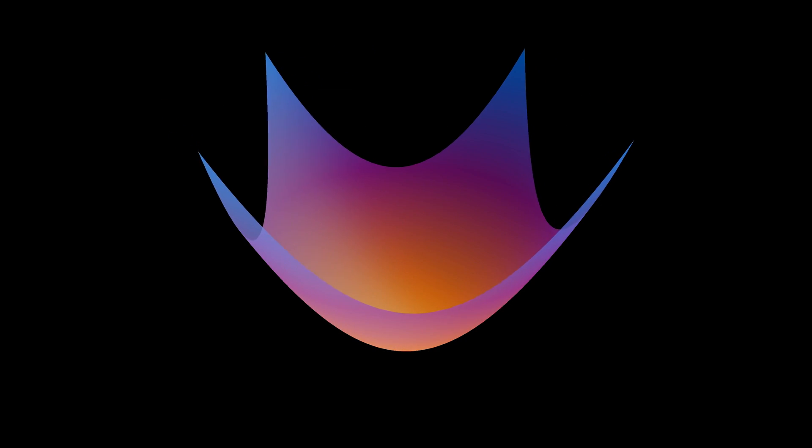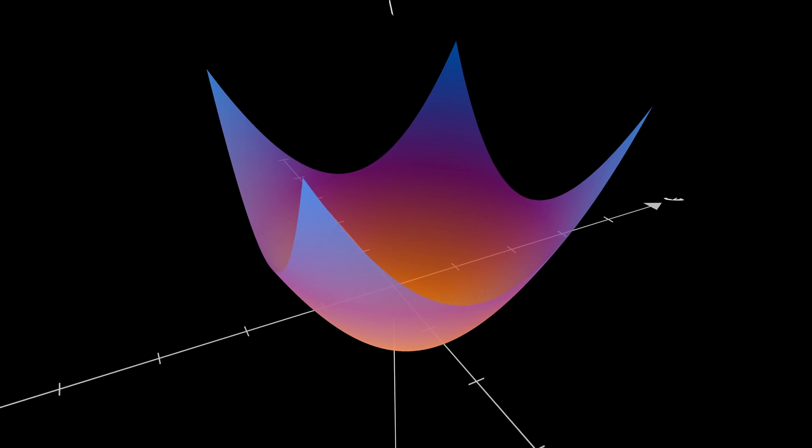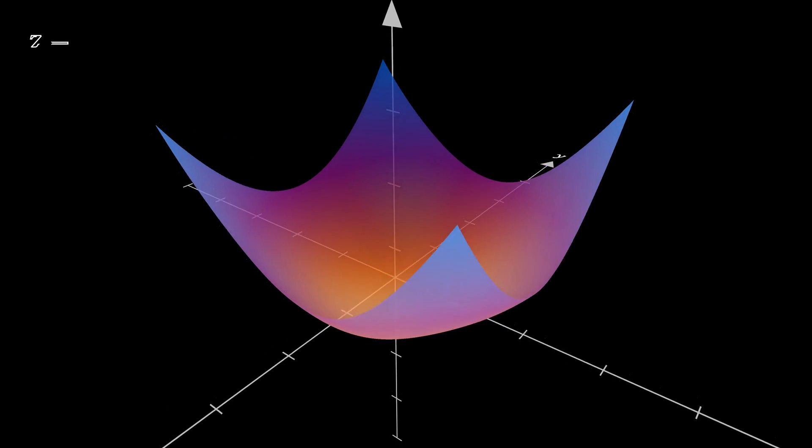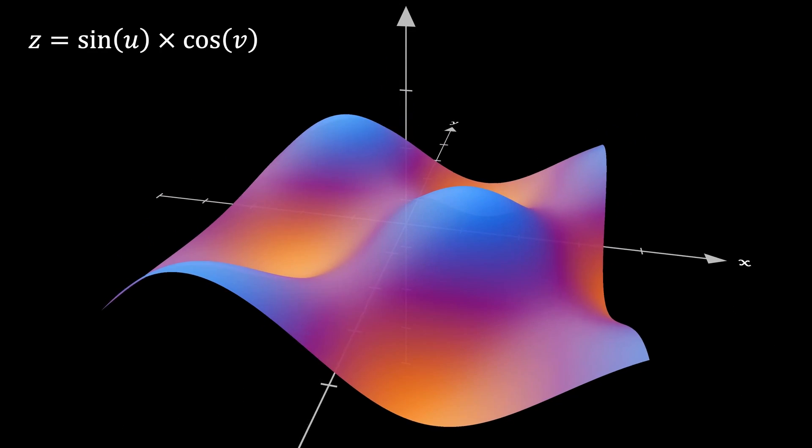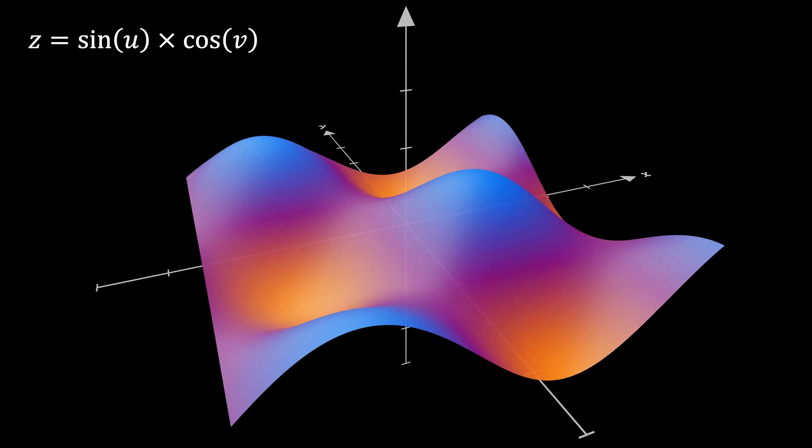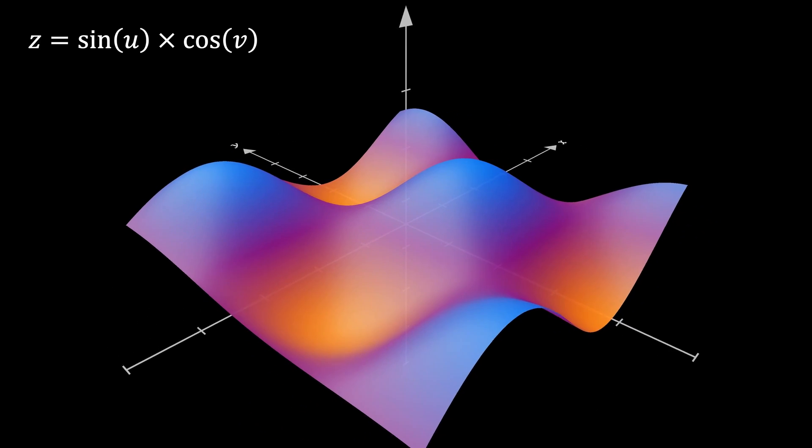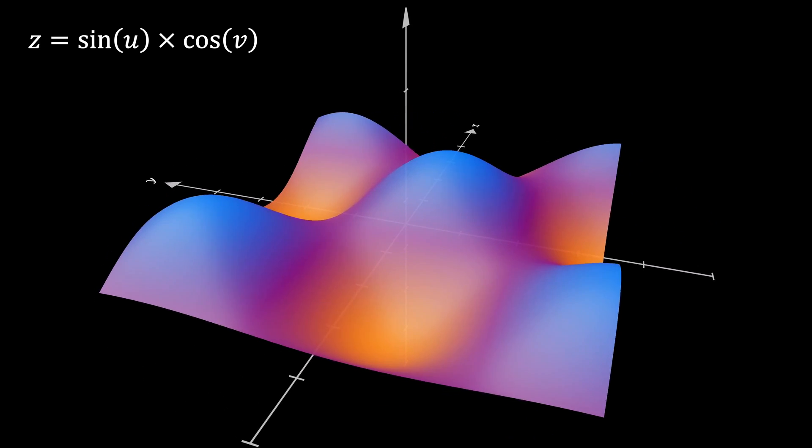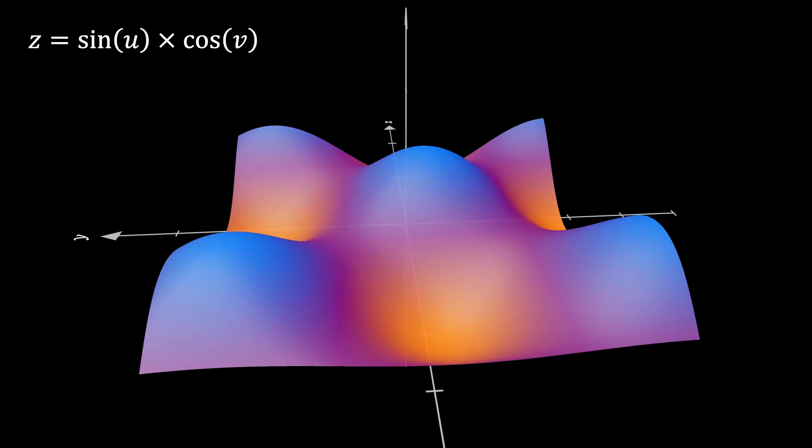Additionally, we can use this same technique, this same approach to create more complex patterns like a wavy sheet. Now, taking this approach one step further, we can even bring the dynamism in this pattern by changing the Z coordinate with respect to the time. Something like this.